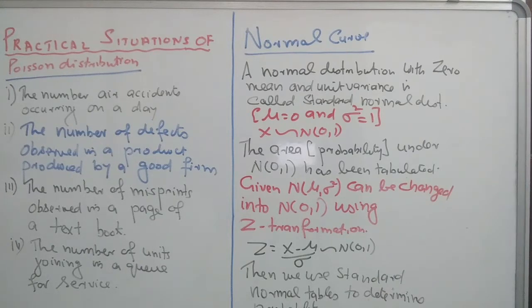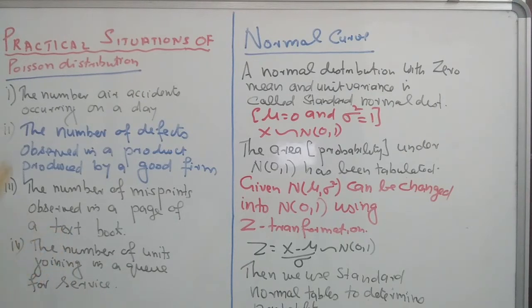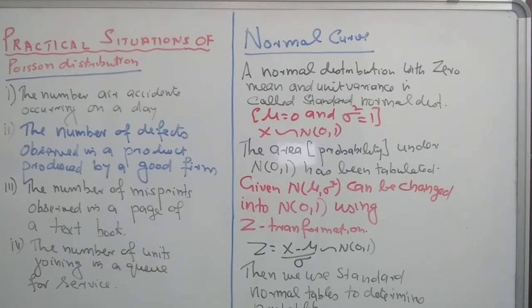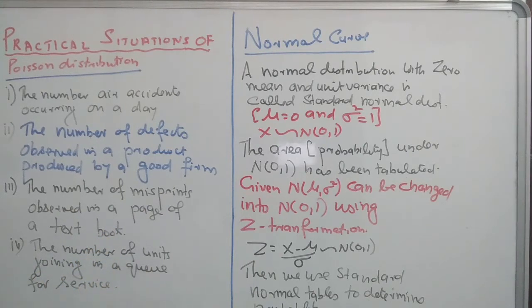Some practical situations where Poisson distribution is applied — where chances of occurrence are very large but actual number of occurrences is negligibly small: (1) The number of air accidents occurring in a day. (2) The number of defects observed in a product produced by a good firm. (3) The number of misprints observed in a page of a textbook. (4) The number of units joining a queue for a service.